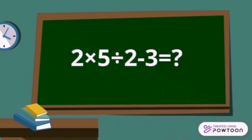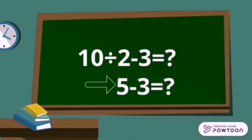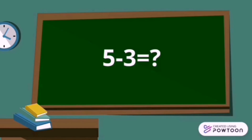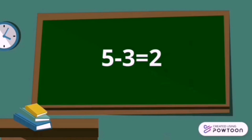First, let's solve it from left to right. 2 times 5 divided by 2 minus 3 equals blank. Multiply first: 2 and 5. 10 divided by 2 minus 3 equals blank. Now let's divide 10 and 2. 5 minus 3 equals blank. Now let's subtract 5 and 3. 5 minus 3 equals 2. The answer to Joy's math problem is 2.